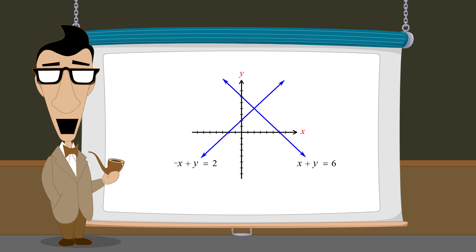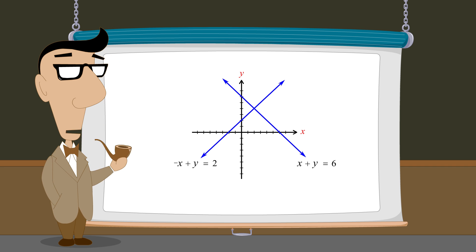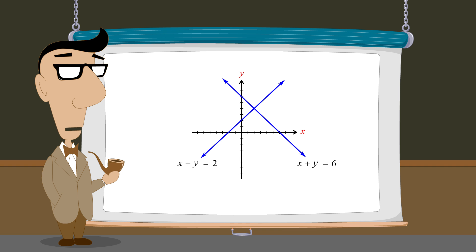Systems of equations can consist of more than two equations, and the equations in the system can contain more than two variables. In this lecture, we will introduce systems of three linear equations in three variables and see how they can be visualized in three-dimensional Cartesian space.